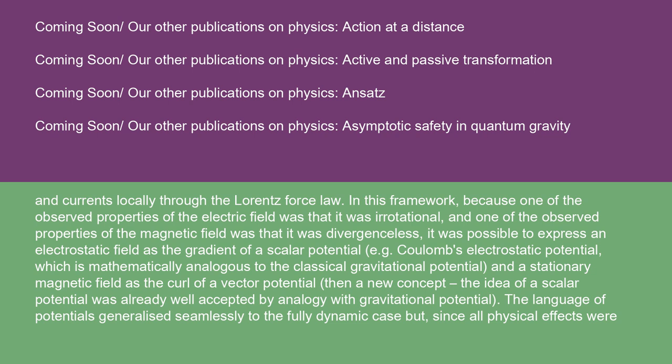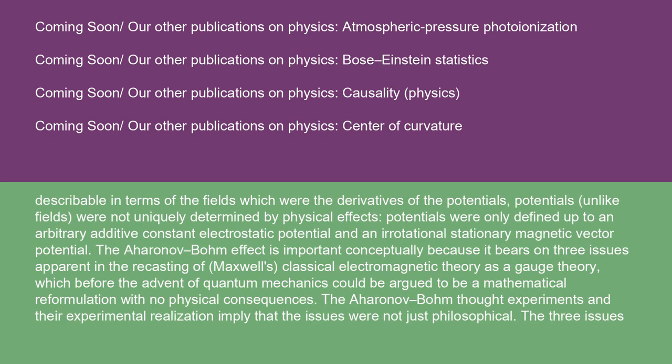And currents locally through the Lorentz force law. In this framework, because one of the observed properties of the electric field was that it was irrotational, and one of the observed properties of the magnetic field was that it was divergenceless, it was possible to express an electrostatic field as the gradient of a scalar potential, e.g., Coulomb's electrostatic potential, which is mathematically analogous to the classical gravitational potential, and a stationary magnetic field as the curl of a vector potential, then a new concept. The idea of a scalar potential was already well accepted by analogy with gravitational potential. The language of potentials generalized seamlessly to the fully dynamic case, but since all physical effects were describable in terms of the fields which were the derivatives of the potentials, potentials, unlike fields, were not uniquely determined by physical effects.